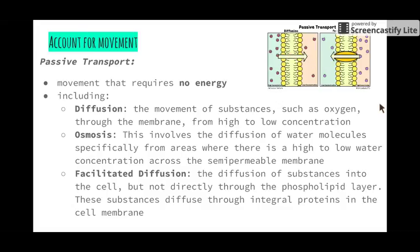There are three different types of passive transport: diffusion, osmosis, and facilitated diffusion. Diffusion is the movement of substances such as oxygen through the membrane from a high concentration of oxygen to a low concentration of oxygen.